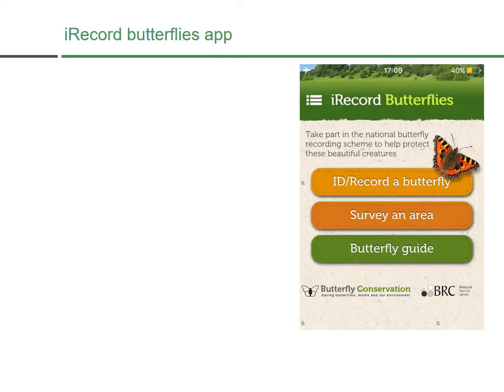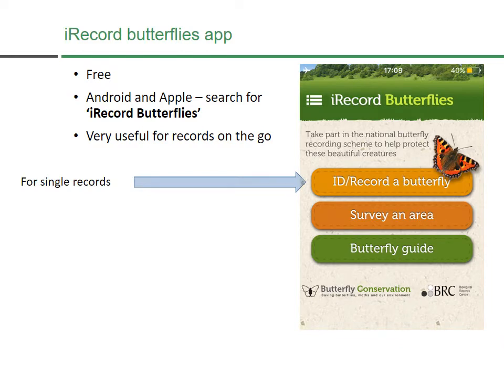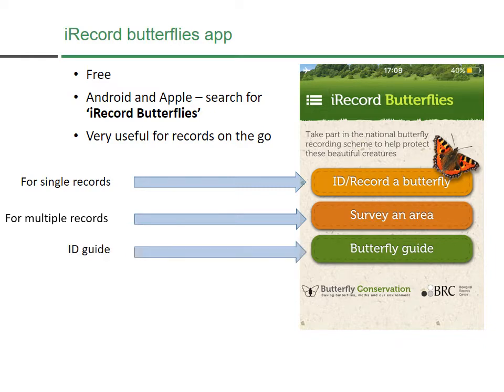One of the easiest ways to record butterflies is through the iRecord Butterflies app. This is free to download, it's available for Android and Apple devices — all you have to do is search for 'iRecord Butterflies.' It's really useful for records on the go. You can use it for single records — that's a single species in a single place — and using that method you can attach a photograph, though that isn't necessary. You can also send in multiple records, where you want to send in sightings of several different species from one area. There's also a free butterfly ID guide with photographs of all the butterflies, their locations, and when you're likely to see them.